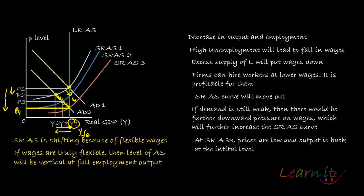Output of the economy in the long run is determined by the productivity of resources and technology — not by the level of prices. Prices play their role only in the short run, but not in the long run. In the long run, what determines output is the productivity of resources and technology. A vertical long-run aggregate supply curve indicates that output in the long run is unrelated to the price level.